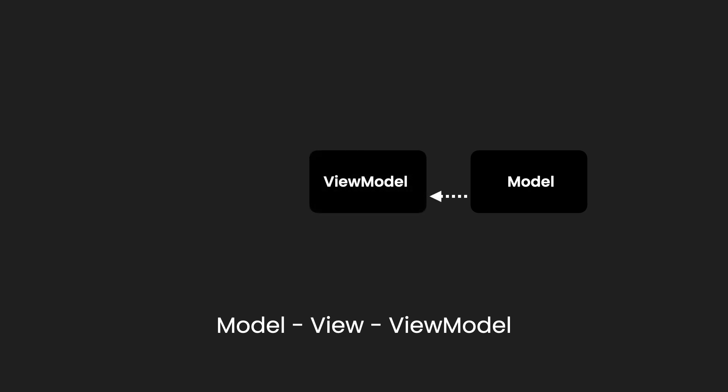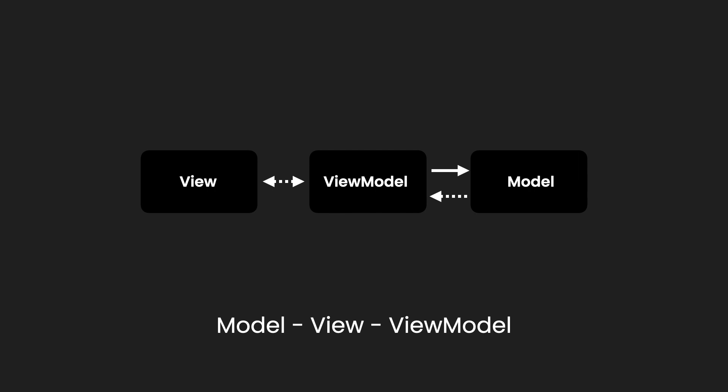Next up we have the ViewModel. The Model interacts with the ViewModel, and the purpose of the ViewModel is purely to contain all our business logic. We can manipulate the Model if we need to, but all our business logic is stored in the ViewModel. Finally, we have our View. The responsibility of the View is the presentation layer — a UIView or a ViewController. We use the ViewModel in the View to get data, or use the View to interact with the ViewModel to change data within the Model.